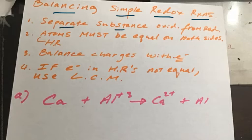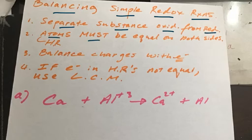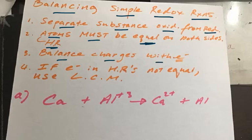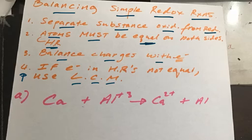So we're going to separate the substance oxidized from the substance reduced. We're going to put in the oxidation numbers. If your oxidation number went up, you got oxidized. If your oxidation number went down, you got reduced. Next, the atoms on both sides must, must, must be equal in terms of the half reactions — you must have the same number of atoms on both sides. Then we're going to balance the charges with electrons. Now the addition to what we've learned before is step number four: if the electrons in the half reactions are not equal, we're going to use the lowest common multiple to make them equal. We will do an example, so don't worry about it.